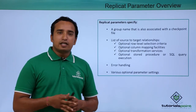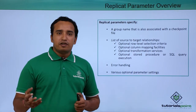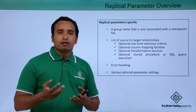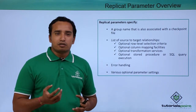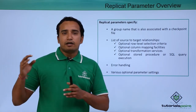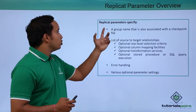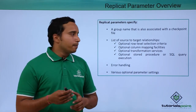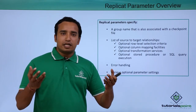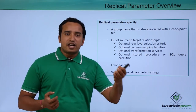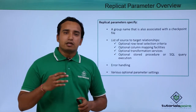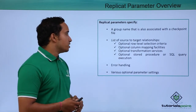At the target system, the replicate process takes data either directly from the extract or from trail files created by the collector process. The collector collects data from extract, creates trail files at the target system, and the replicate process uses those trail files to replicate data to the target database. The replicate parameter file starts with the replicate group name, then you define source-to-target table mappings, even if the table names differ between source and target.